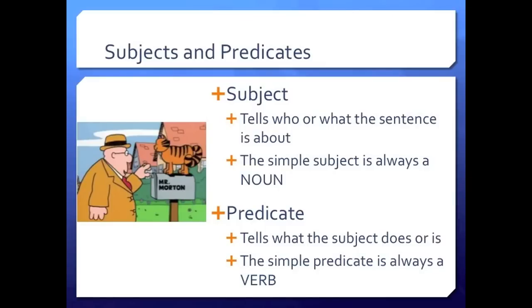In the last lesson, you learned that a subject tells who or what the sentence is about. The simple subject of a sentence is always a noun. You also learned that the predicate of the sentence tells what the subject does or is. The simple predicate is always a verb. Keep these basic facts in mind as we move on with compound subjects and predicates.